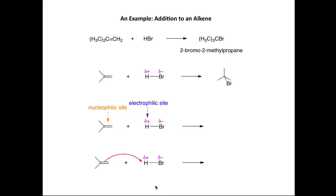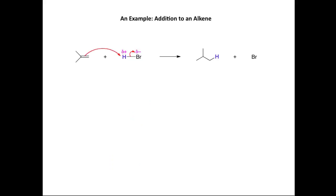The first curly arrow attacks from the center of the alkene C=C double bond toward the delta plus H. Because we're attacking a neutral hydrogen atom in HBr, we need a second curly arrow taking electron density from the H-Br bond and moving it onto the electronegative bromine, giving us two products. The H is placed at the end of the chain, reflecting the product formed. Electron density is taken away from the alkene, so that carbon becomes positively charged, while bromine becomes negatively charged.